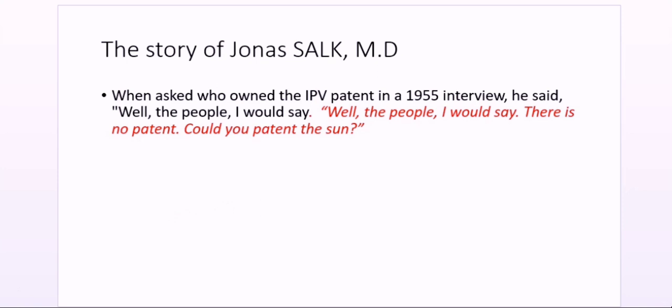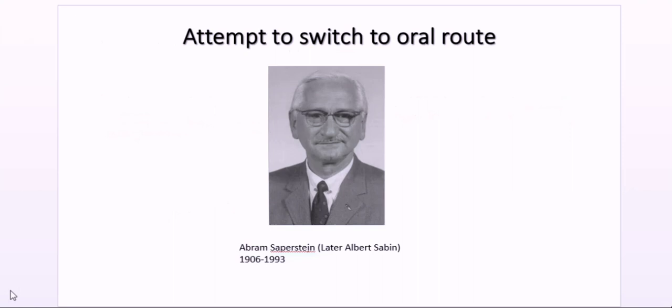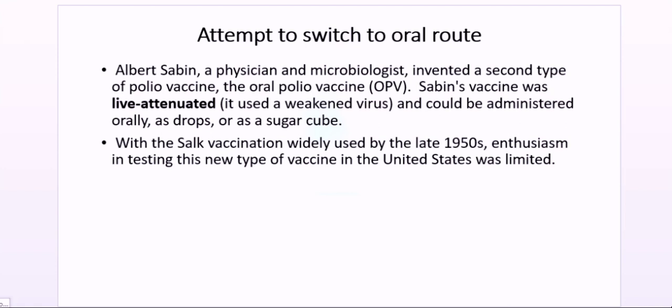The attempt to switch to the oral route was made possible by Abraham Saperstein, who would later become known as Albert Sabin, born in 1906 in Poland and who died in 1993. Sabin was a physician and microbiologist who invented a second type of polio vaccine — the oral polio vaccine, or OPV. It was a live attenuated vaccine using a weakened virus that could be administered orally as drops or on a sugar cube.